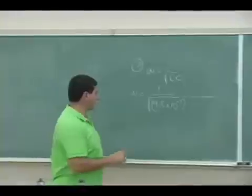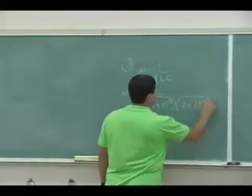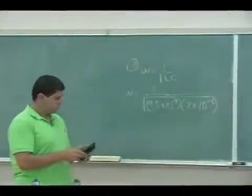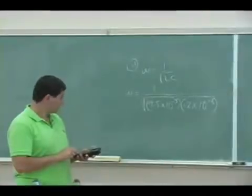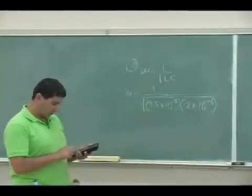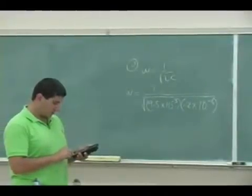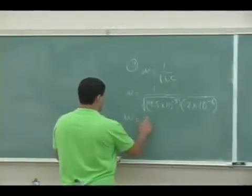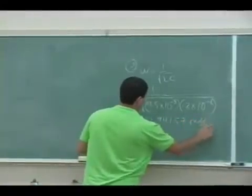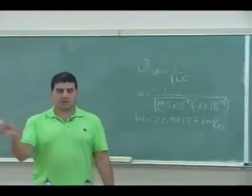Let's calculate omega. L is 9.5 millihenries, so 10 to the minus three, and the capacitor is 0.2 times 10 to the minus six. Got to take the square root of that, then invert it. That gives us 22,941.57 radians per second.